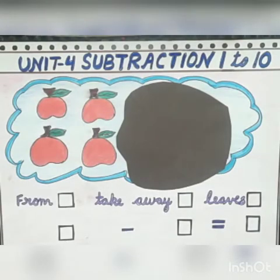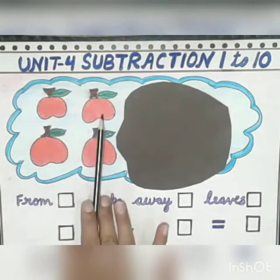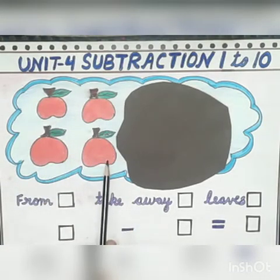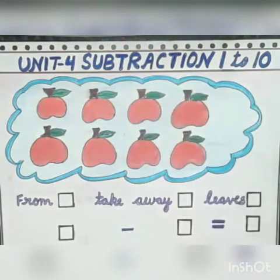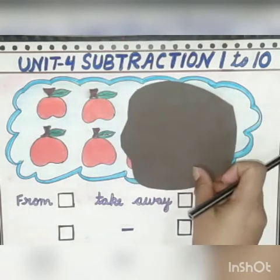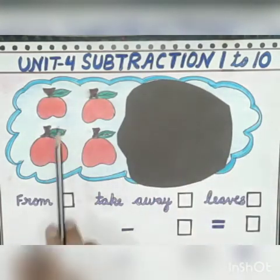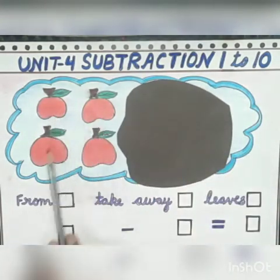Now let's count how many apples are left. 1, 2, 3, 4. Earlier there were 8 apples. Now when Sam ate 4 apples, we are left with 4 apples.